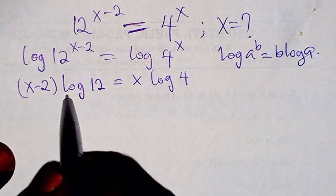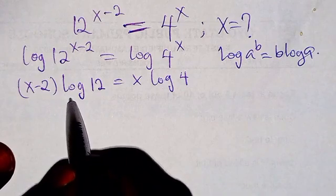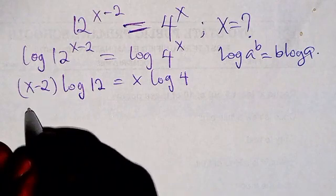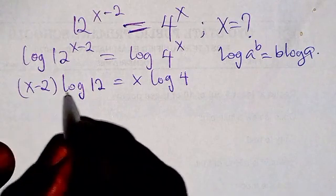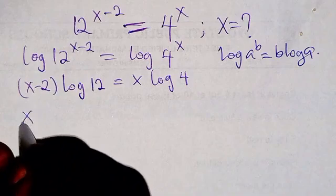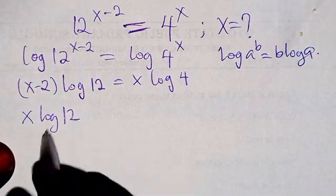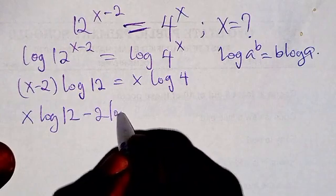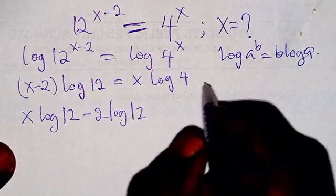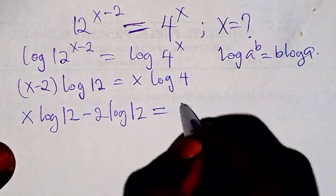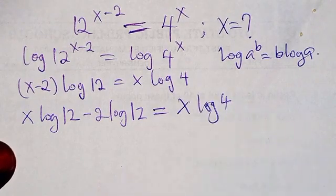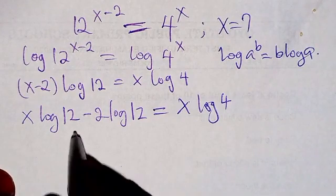For the left hand side, we are going to distribute log 12 over what we have inside the parentheses. So we're going to have x multiplying log 12, giving x log 12, then minus 2 multiplying log 12, giving minus 2 log 12. This equals x log 4. Are you following?